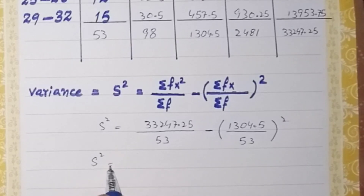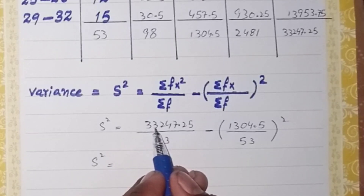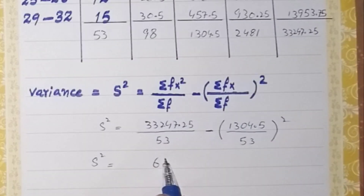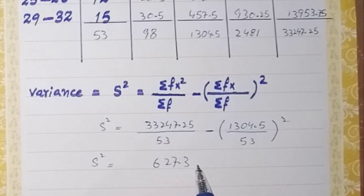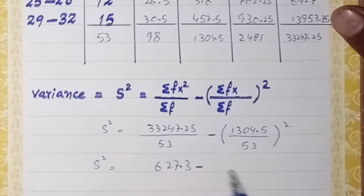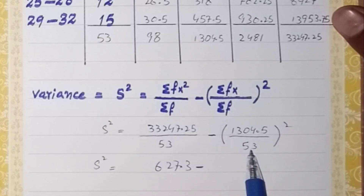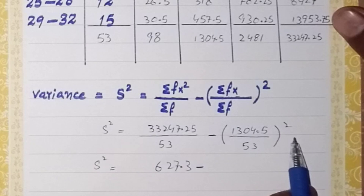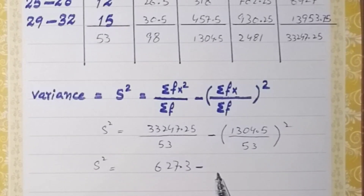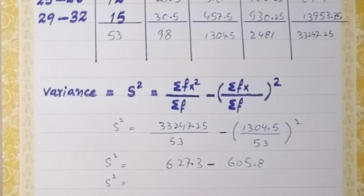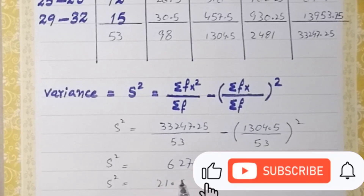In the next step, when we divide 33,247.25 by 53, we get 627.3. Then we divide 1304.5 by 53 and square that result to get 605.8. Therefore, the variance is equal to 627.3 minus 605.8, which gives us a variance value of 21.5.